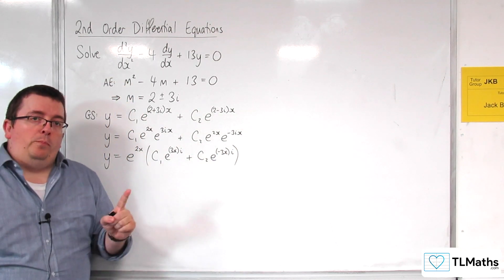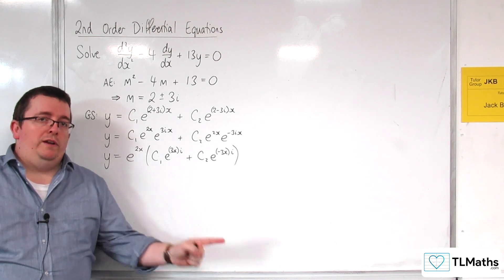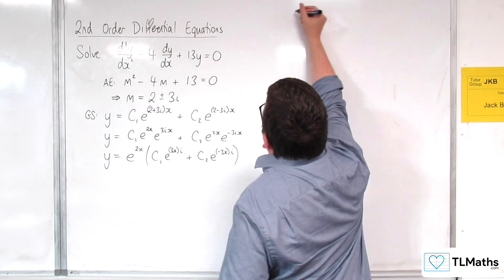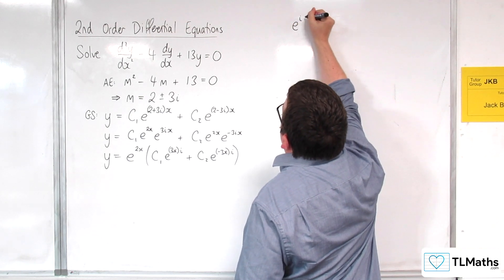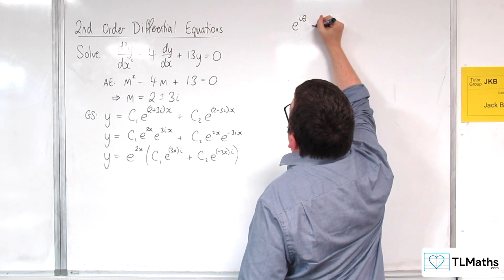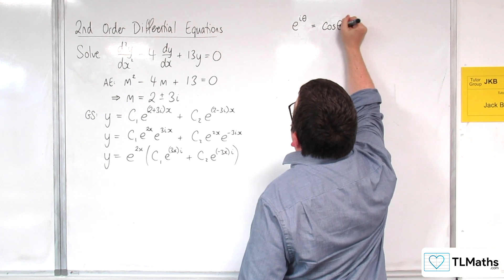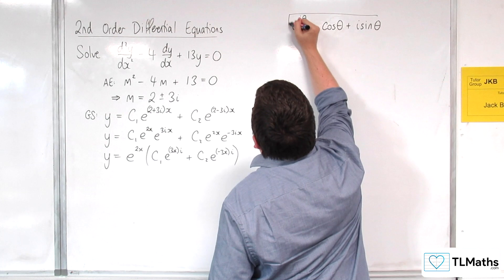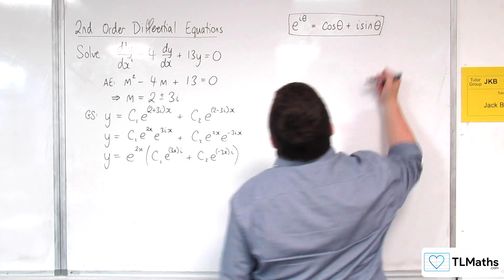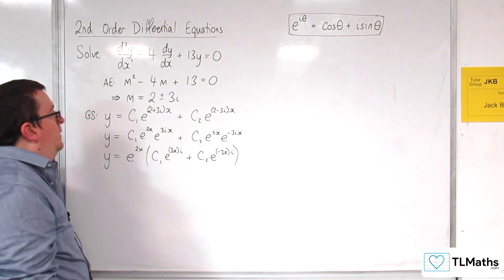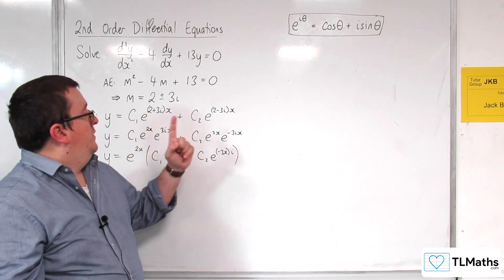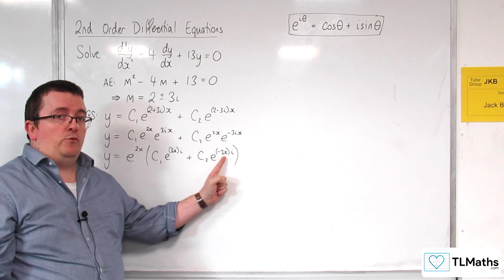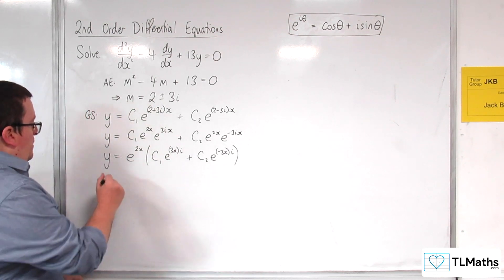Now, at this point, we want to recall Euler's formula. So Euler's formula said that e to the i theta is equal to cosine theta plus i sine theta. So I'm going to use that. So where I've got the i, the theta in this case is 3x, and the theta in this case is minus 3x. So let's see what we get.